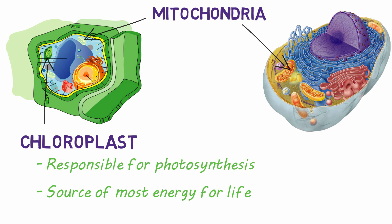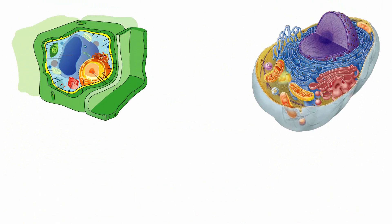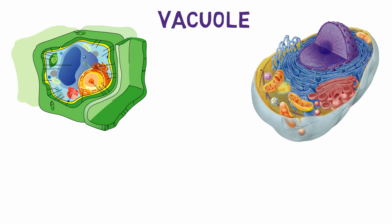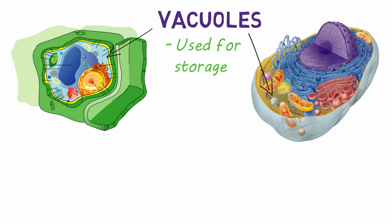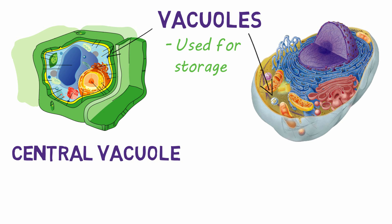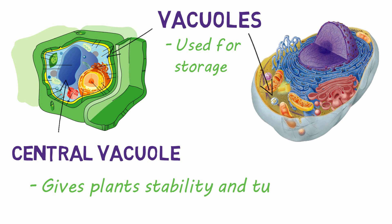Both plant cells and animal cells have vacuoles, which are used for storage in the cell. However, only plant cells have a large central vacuole that contains mostly water. It's this central vacuole that gives plants their stability and turgor.